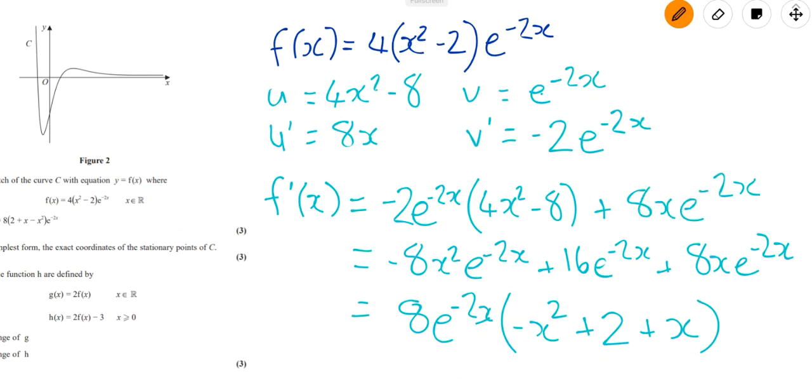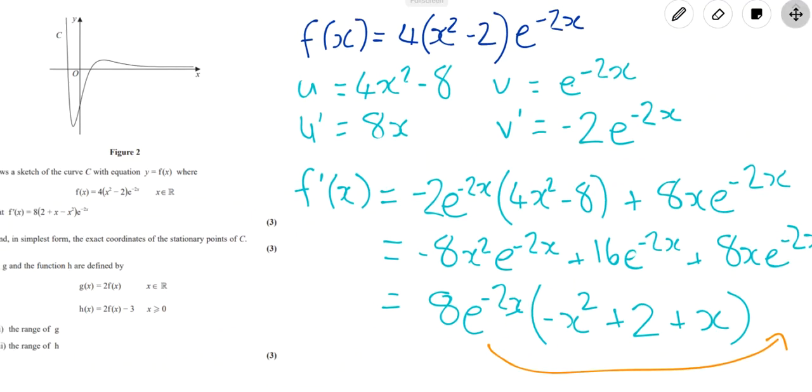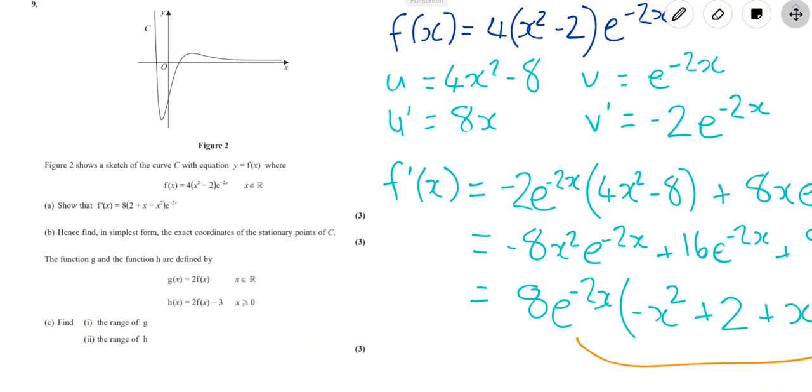They've put this at the end of the bracket. I'm just going to put it at the front just so it's really obvious what we're doing. So then in the bracket we'll have minus x squared plus 2 and plus x. And that is it. That's what they wanted. They've just put this at the end, which is the same thing. Great. So that's part A done. I hope you got that.